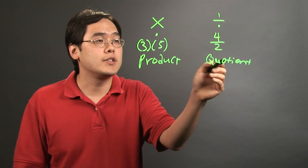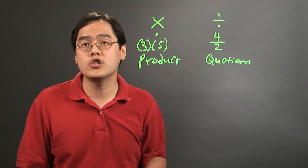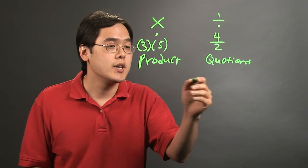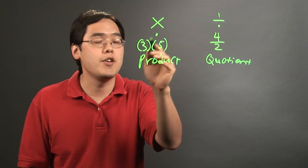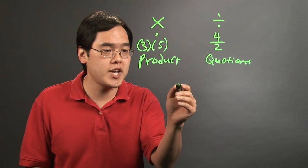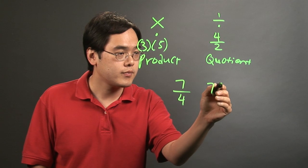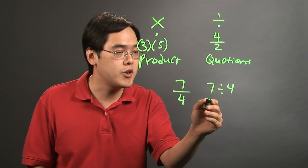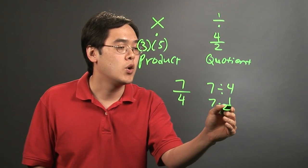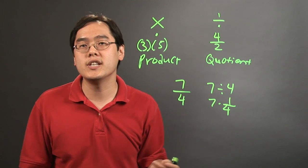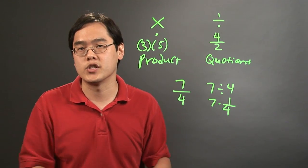But at the end of the day, product and quotient, multiplication and division, are really related to each other because dividing is really another way of saying multiplying. For example, if you have 7 divided by 4, it can be written this way but can also be thought of as 7 times 1 quarter. So division is kind of thought of as the inverse of multiplication.